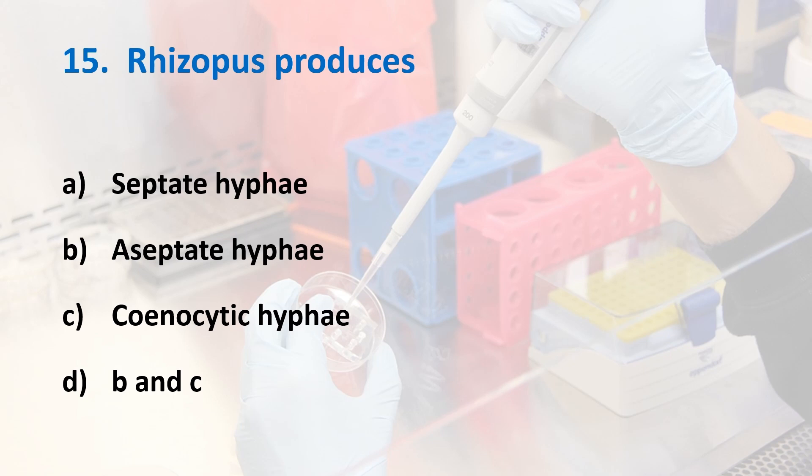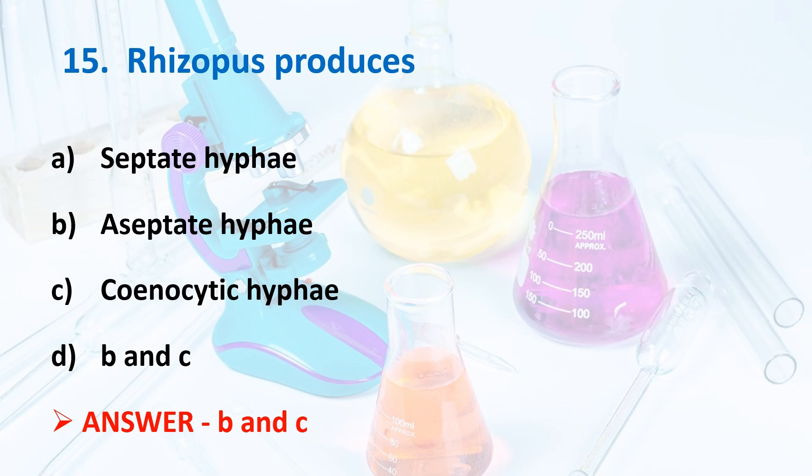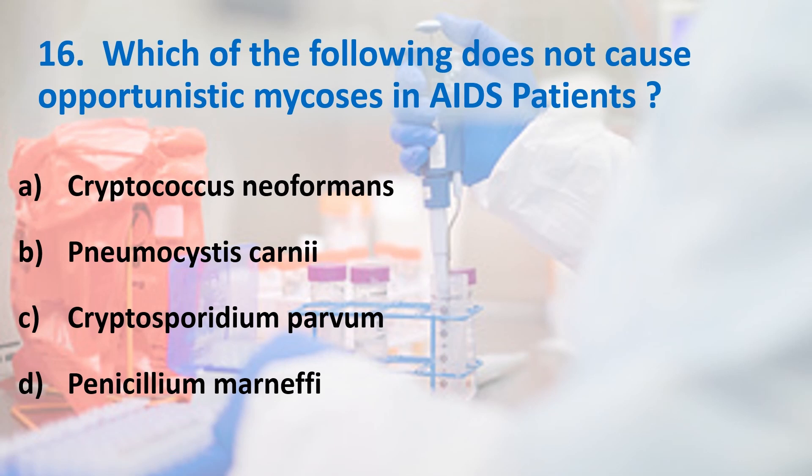Fifteenth question: Rhizopus produces? Options: Septate hyphae, Aseptate hyphae, Coenocytic hyphae, Option B and C. Answer is Option D — Aseptate hyphae, also called Coenocytic hyphae. The Zygomycetes, also known as Phycomycetes, possess aseptate hyphae, and include Absidia, Rhizopus, and Mucor.